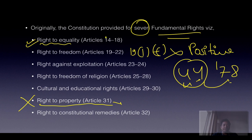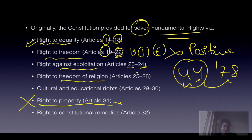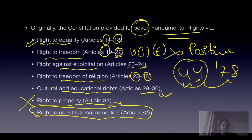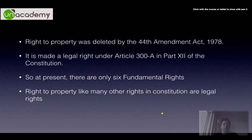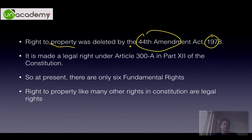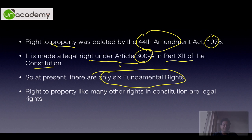We have the right to equality under Article 14 to 18, right to freedom under Article 19 to 22, right against exploitation under Article 23 to 24, freedom of religion under Article 25 to 28, cultural and educational rights under Article 29 to 30. The most important article according to Dr. B.R. Ambedkar, the father of the Indian constitution, is Article 32 — the right to constitutional remedy, which is the right to enforce rights. The right to property was deleted by the 44th Amendment Act and is now a legal right under Article 300A in Part 12. So there are only six major fundamental rights.